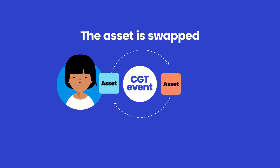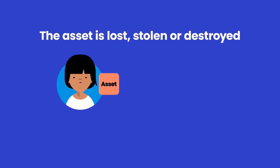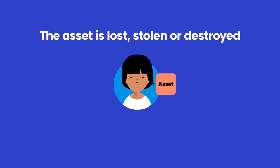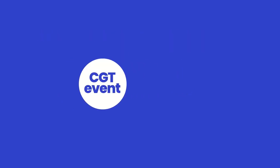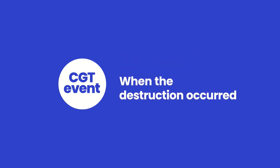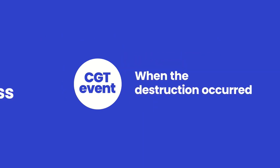If your asset is lost, stolen or destroyed, a CGT event could happen when you receive compensation for its loss or when the loss is discovered or the destruction occurred.